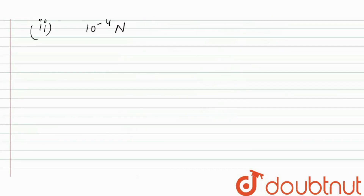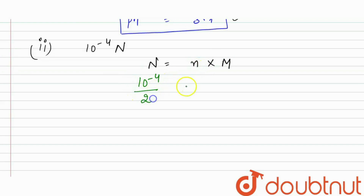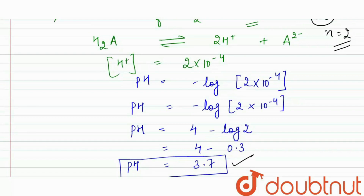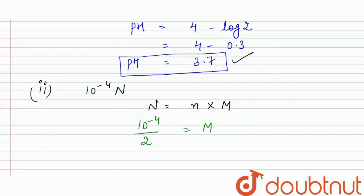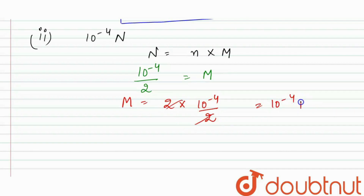To find the concentration of H⁺ ions, we need molarity, but we are given normality. We know that normality = N factor × molarity. Since the N factor is 2, molarity = 10⁻⁴ / 2. But in the reaction, H₂A produces 2 H⁺ ions, so [H⁺] = 2 × (10⁻⁴ / 2) = 10⁻⁴ molar, because the 2s cancel out.